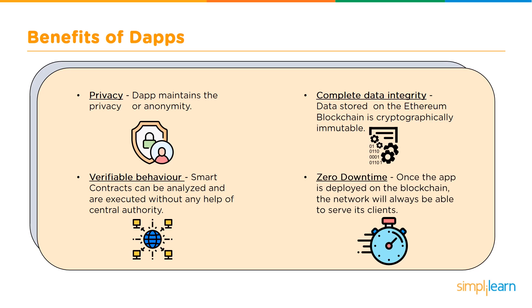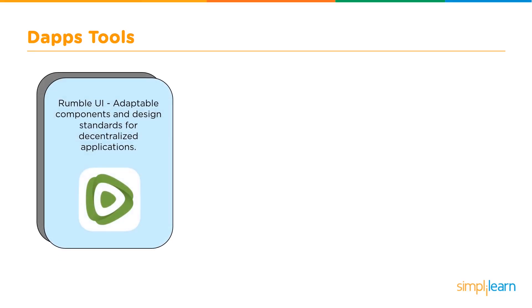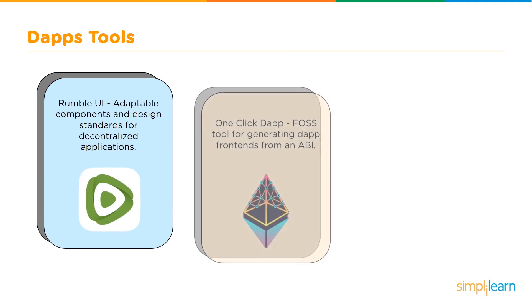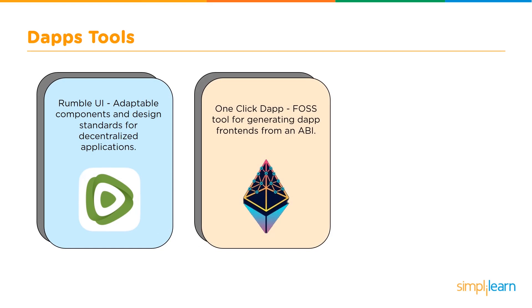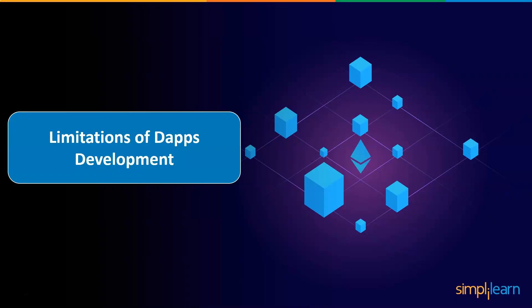Now let's have a look at the dApp tools. Rumble UI provides adaptable components and design standards for decentralized applications. One Click dApp is a tool for generating a dApp front-end from an ABI. Etherflow is also a tool for Ethereum developers to test their nodes and compose and debug RPC calls from the browser.